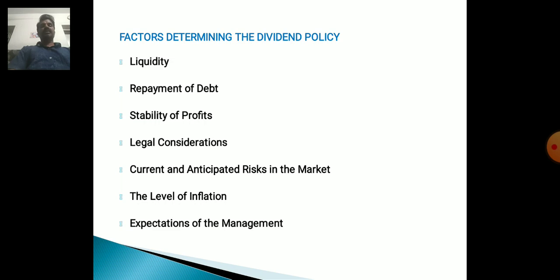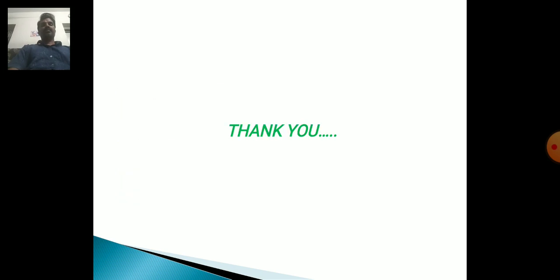Factors determining the Dividend Policy. The following factors determine the Dividend Policy: first, liquidity; second, repayment of debt; third, stability of profits; fourth, legal consideration; fifth, current and anticipated risk in the markets; sixth, the level of inflation; and seventh, expectation of the management. Thank you.